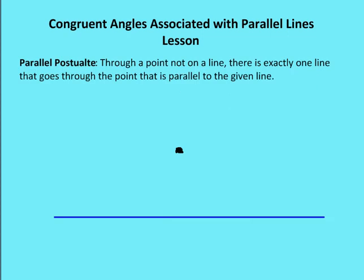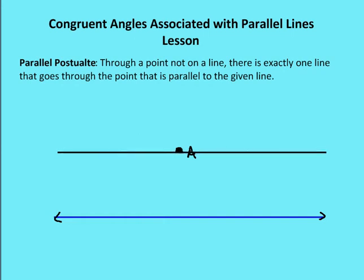Let's talk about the parallel postulate. The parallel postulate says that through a point that's not on a line — here I have my line and my point, which I'll call point A — through that point, there is exactly one line that goes through that point that is parallel to the given line. So if I were to draw a line through A, there is only one line on a plane that's going to be parallel to the line in question. We'll call this line L, and we'll call the given line M. So there's only one line L that is parallel to line M that goes through point A. That's the parallel postulate.